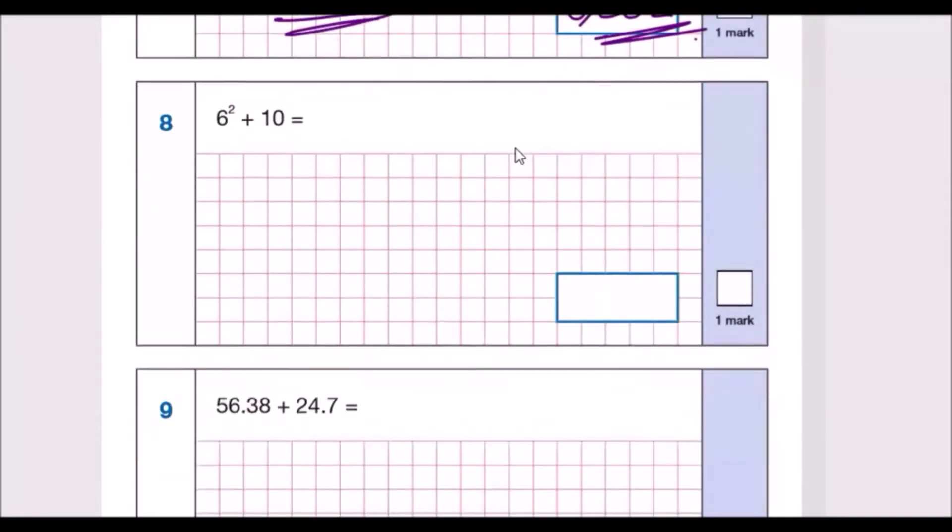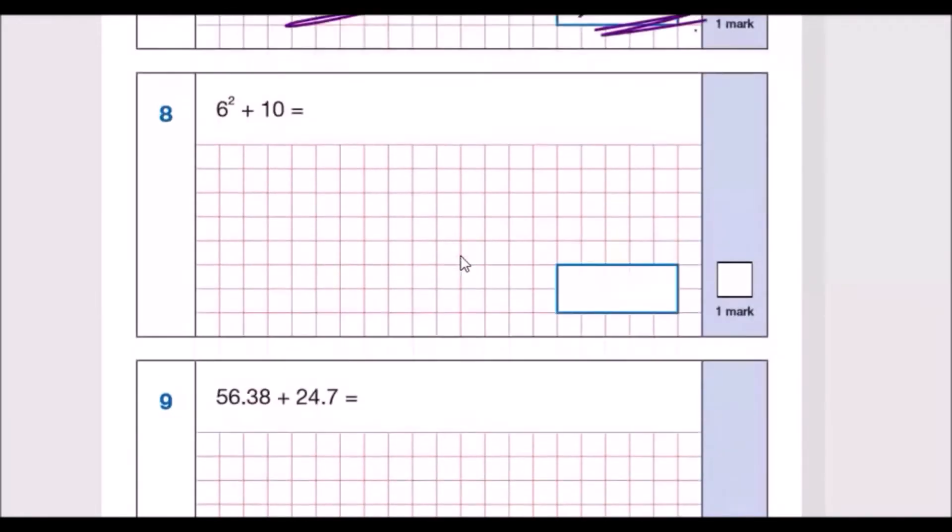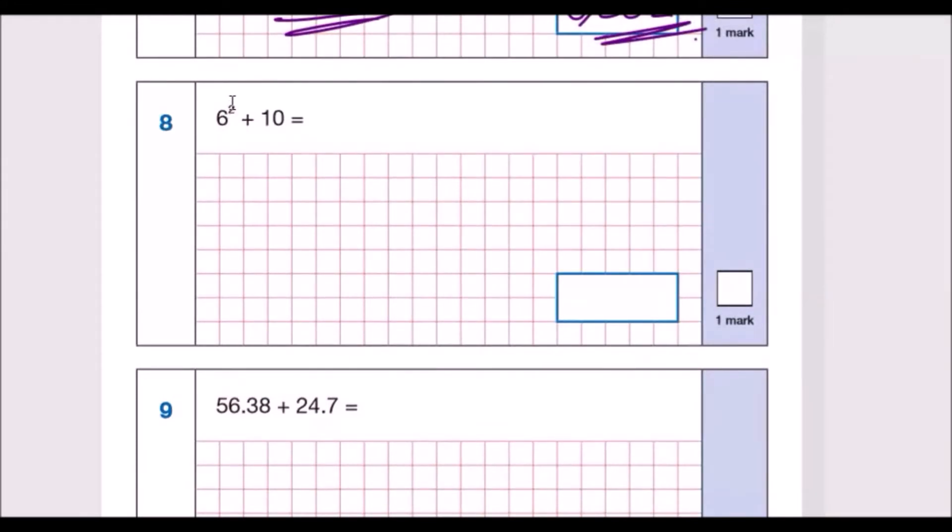Question 8: 6 to the power 2, so this means 6 squared. 6 squared plus 10. 6 squared literally means 6 times 6 which is 36. So now we've got 36 plus 10 is 46.